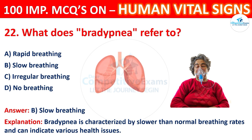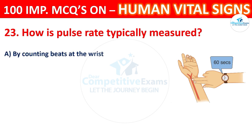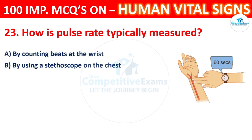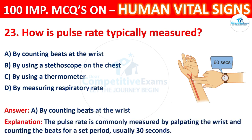Question 23: How is pulse rate typically measured? Options: by counting beats at the wrist, by using a stethoscope on the chest, by using a thermometer, or by measuring respiratory rate. The correct answer is A, by counting beats at the wrist. The pulse rate is commonly measured by palpating the wrist and counting the beats for a set period, usually 30 seconds.